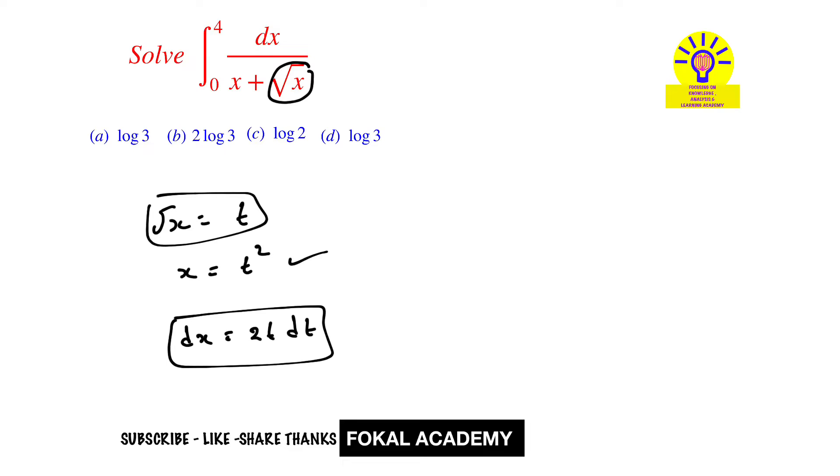Now let's change the limits. So these are the x limits. So whenever x equal to 0, and whenever x equal to 4, then what are the corresponding t values? We have the relation between x and t. Now substitute these values in this equation. Then we get t equal to 0 whenever x equal to 0, and whenever x equal to 4, t equal to 2.